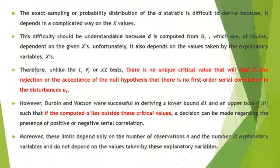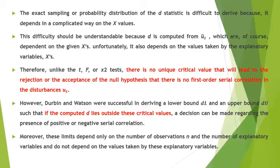The exact sampling distribution of D is difficult to derive because, as Durbin and Watson showed, it depends in a complicated way on the X values. Therefore, critical values of D depend on the number of explanatory variables and the number of observations, and also on the particular values taken by the explanatory variables. Thus, unlike the t-test, F-test, or chi-square test, there is no unique critical value that leads to rejection or acceptance of the null hypothesis of no first-order serial correlation.